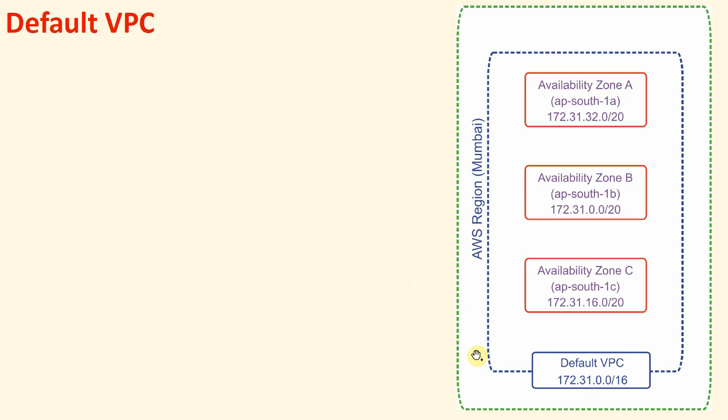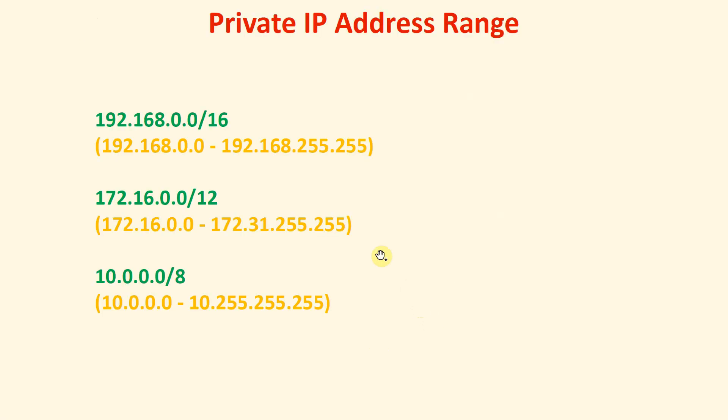Now we do not want this default range. We want to create our own range, our own preference. We will see how to create that VPC. Please remember, when you launch an instance, you will also be given one real public IP as well. When we create our VPC, we have to define whether that VPC is a public VPC or private VPC — if it is public, you will get a real address too.